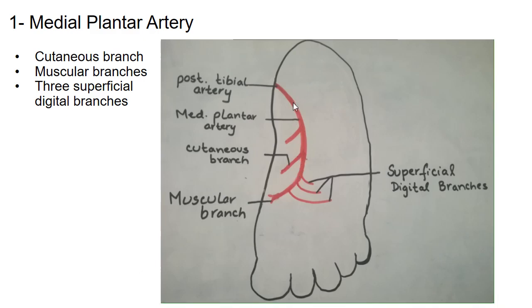The medial plantar artery gives off three branches which supply the sole of the foot. The first branch is the cutaneous branch, or superficial branch, of the medial plantar artery, which supplies the skin over the medial side of the sole. The second branch is the muscular branch, which supplies the muscles of the great toe.